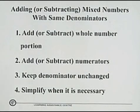For adding or subtracting mixed numbers with same denominators, we have four steps to follow. First step, add or subtract whole number portion. Second, add or subtract numerators. Third, keep denominator unchanged. Four, simplify when it is necessary.